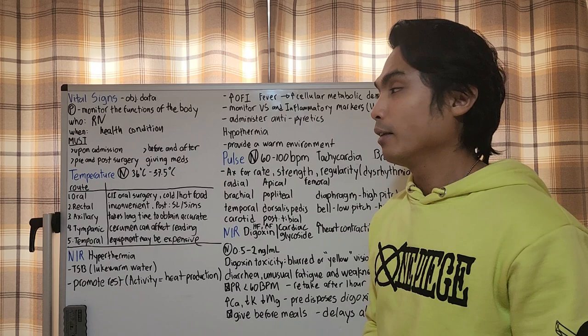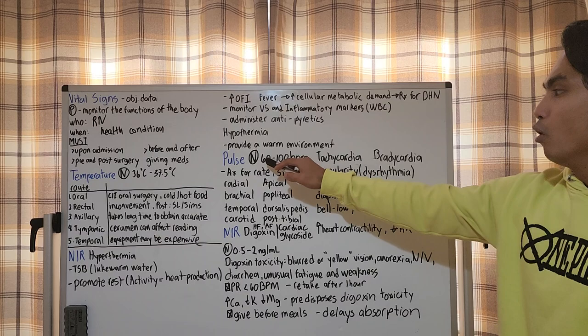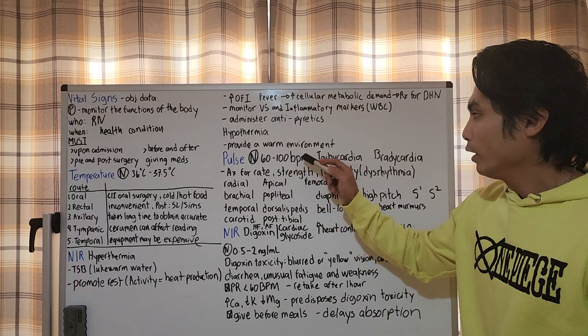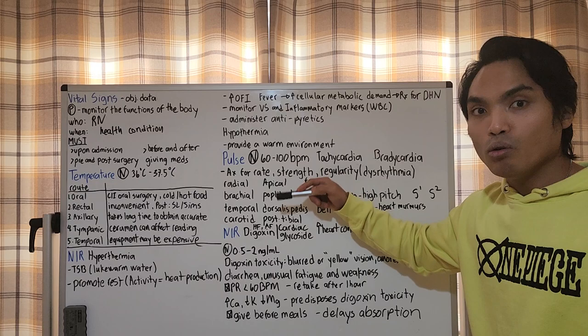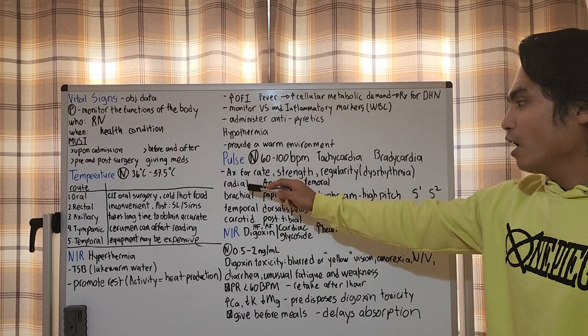Let's go to pulse. Normal pulse rate is 60 to 100. If pulse is high, more than 100, that's tachycardia. If pulse is low, lower than 60, that's bradycardia. We assess pulse for rate, strength, and regularity. For strength, is the pulse bounding or weak? If bounding, maybe the client is overloaded. If weak, maybe dehydrated. We assess regularity for dysrhythmia.